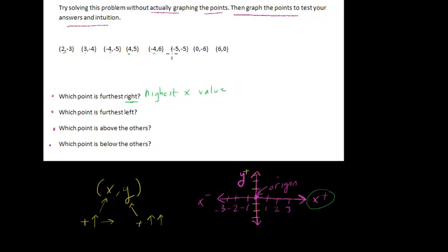Then negative 4, negative 5, 0, and 6. So 6 here is actually the highest, highest to the right. So furthest right, the answer there is (6, 0).